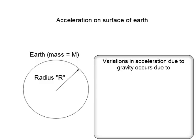The acceleration due to gravity also changes as per the depth of the body below the surface of the earth. Acceleration due to gravity at depth D is given as g_D = g(1 − D/R), where D is the depth of the body from the surface of the earth. Thus, at the center of the earth where D = R, the acceleration due to gravity is 0. Hence, it is maximum on the surface of the earth and 0 at the center. As the acceleration due to gravity decreases, the weight of the body also decreases.